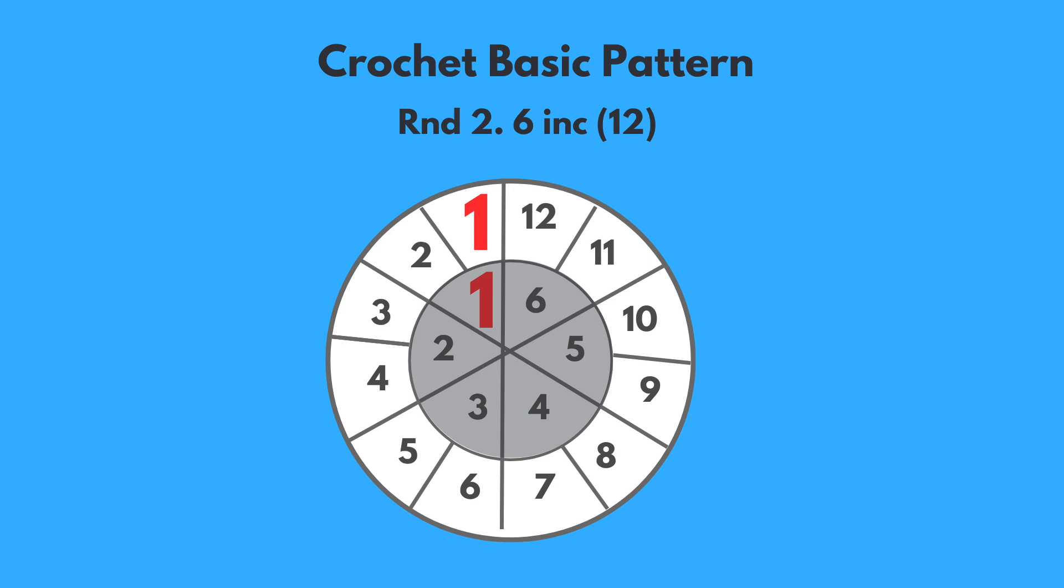That stitch is marked as number 1 in our diagram and it's marked in red. You can see it in the outer circle. This means that we made our very first single crochet stitch of round 2.